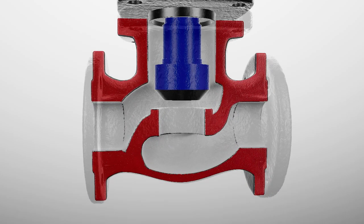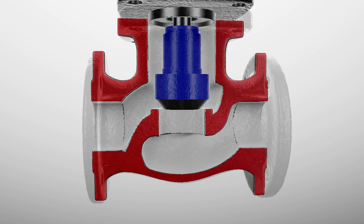As an operator turns the handle counterclockwise, the stem lowers. The plug allows for less and less flow through the opening in the valve body.